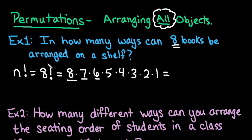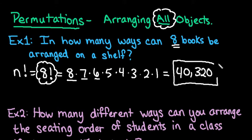If you don't have the factorial button on your calculator, you would just have to enter 8 times 7 times 6 times 5 times 4 times 3 times 2 times 1. That ends up with 40,320 different arrangements of the books on a shelf.